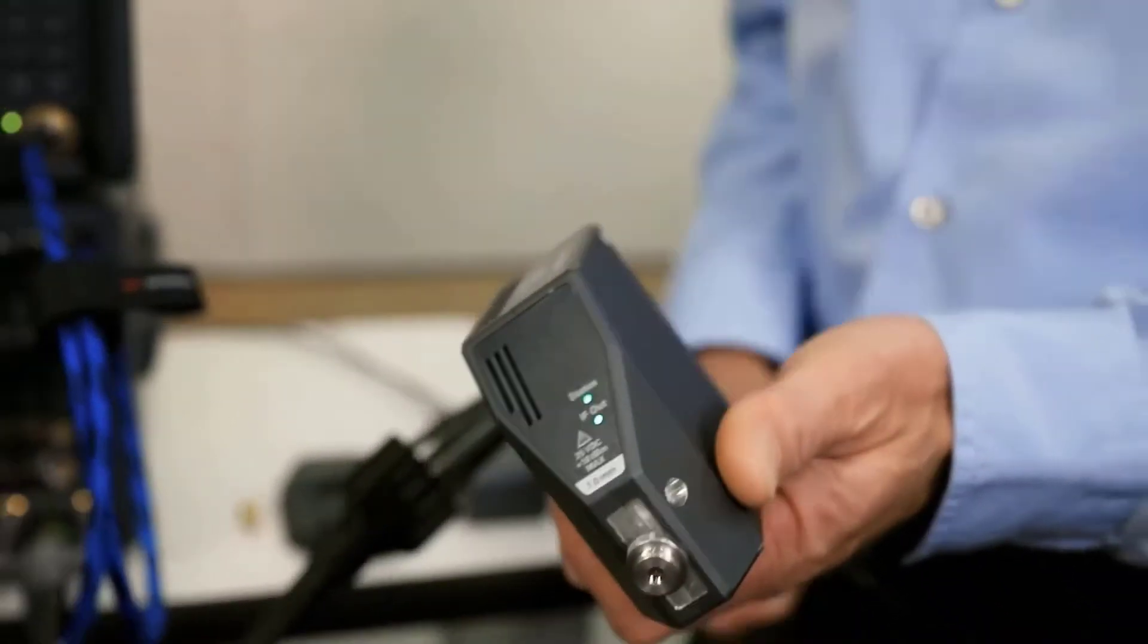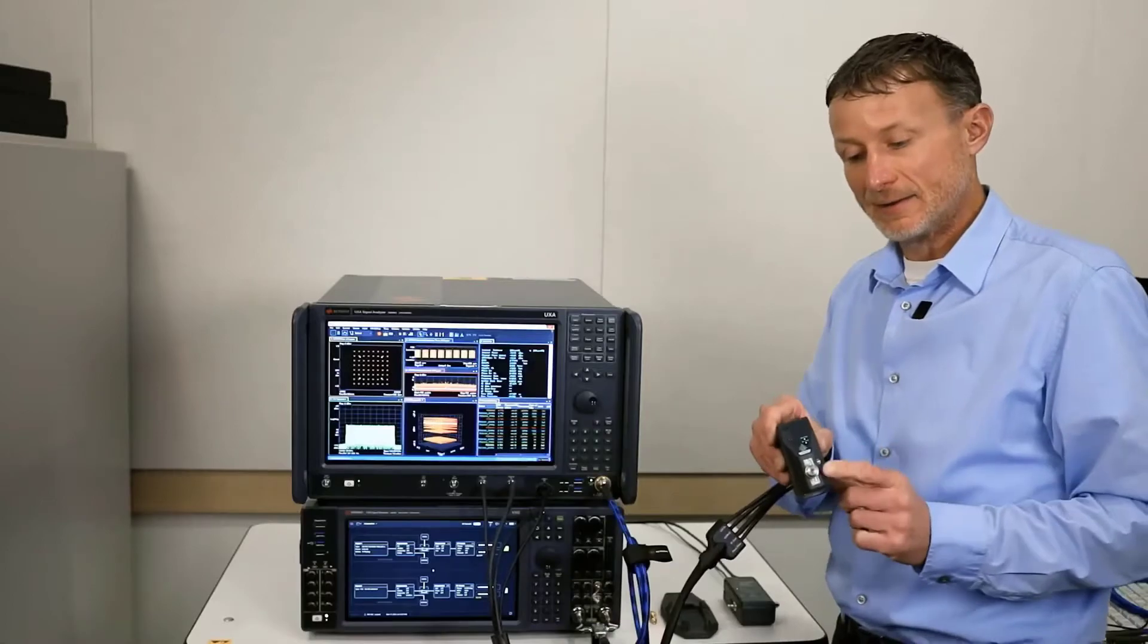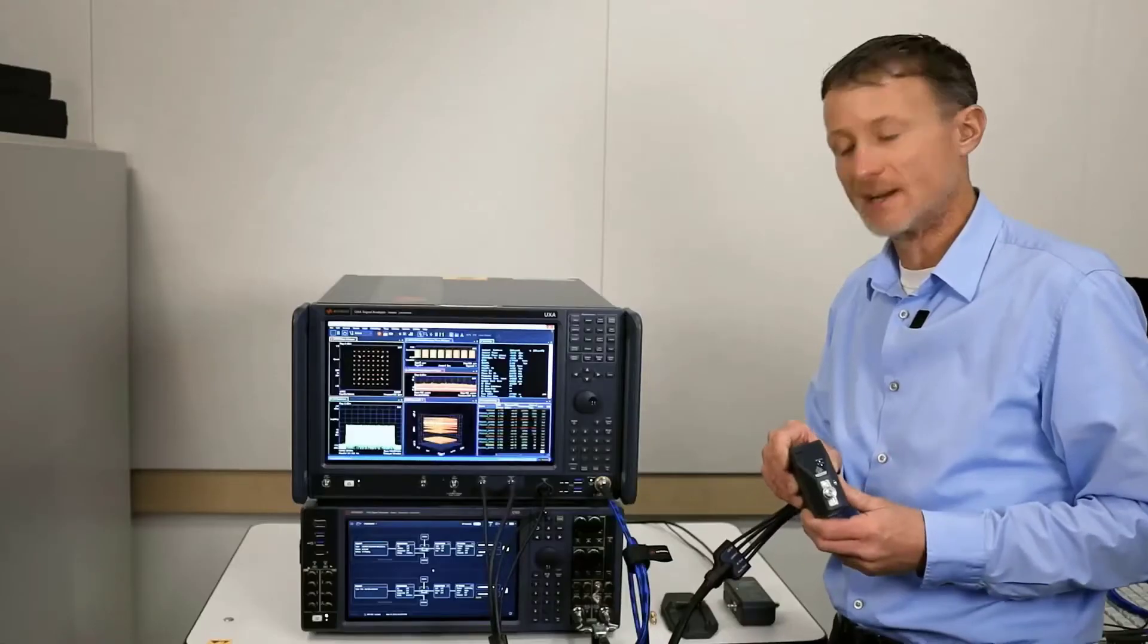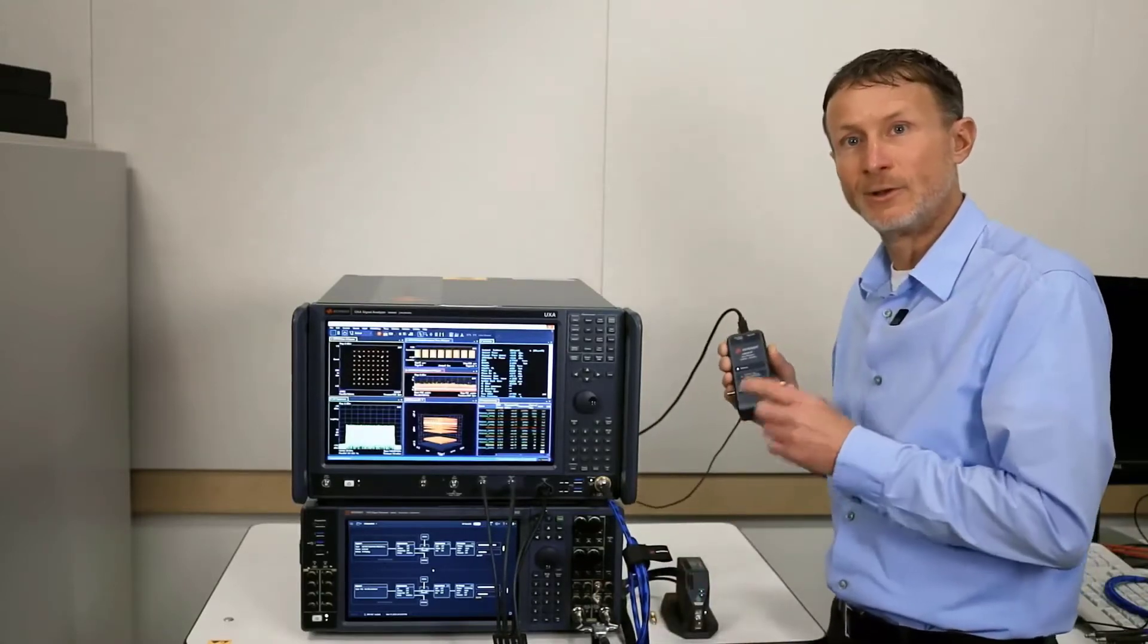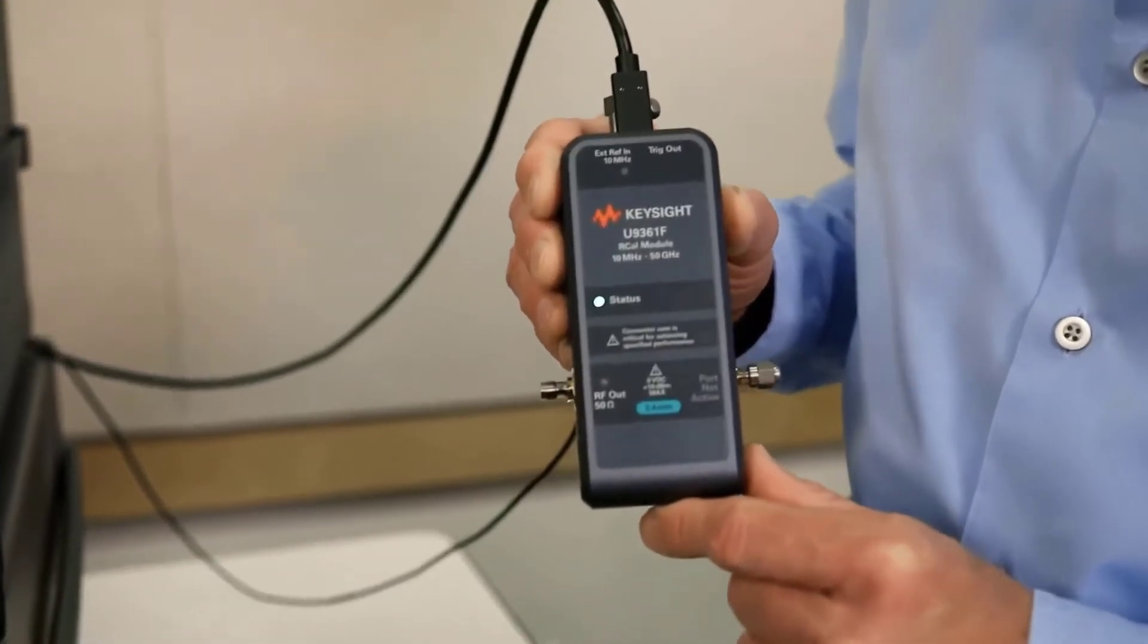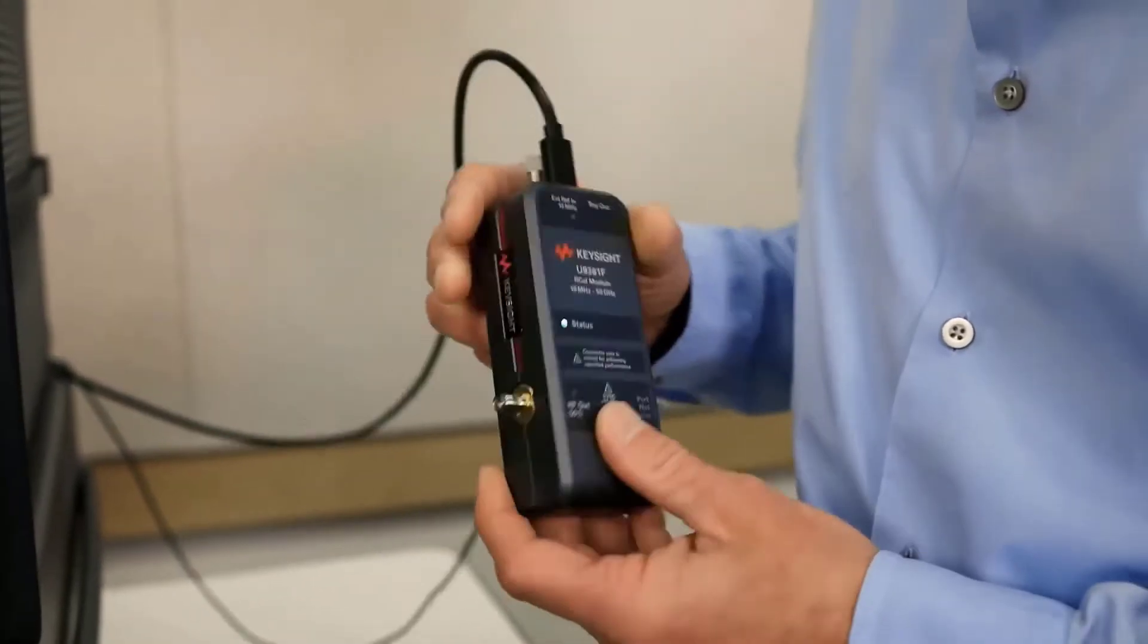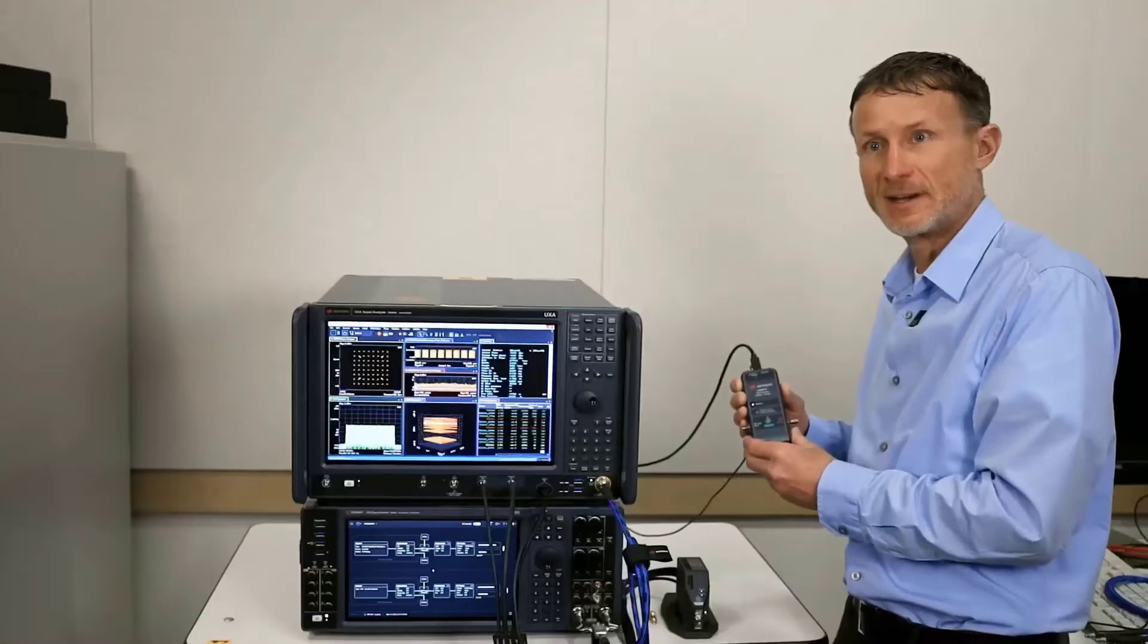It's portable, small, and compact. You can position it right at the device under test, and this connector allows you to measure basically from DC all the way to 110 gigahertz. Lastly, we have a new R-Cal module, which also goes to 110 gigahertz and allows you to recalibrate from the front panel of the instrument or the remote head right to your device under test.